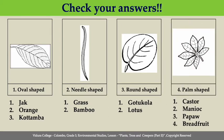Fourth one, palm-shaped. You can draw the correct shape of the palm-shaped leaf as shown in the picture. Examples for palm-shaped leaves are castor, manioc, papaya, and breadfruit.